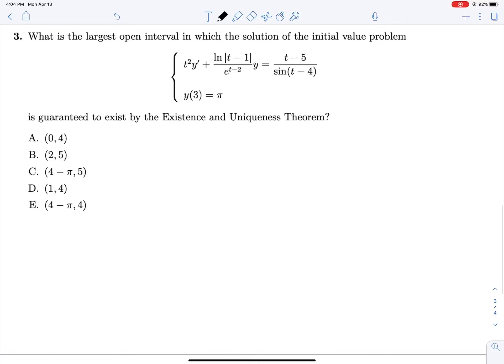What's the largest open interval in which the solution to this initial value problem is guaranteed to exist by the existence and uniqueness theorem? Dividing out our t squared that we see multiplying our highest order derivative, we have y prime plus ln t minus 1 over t squared e to the t minus 2, y equals t minus 5 divided by t squared sine t minus 4.